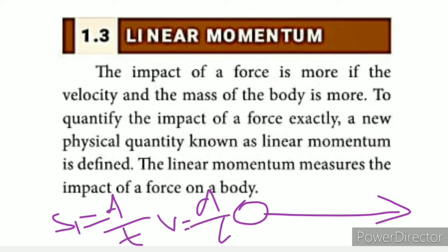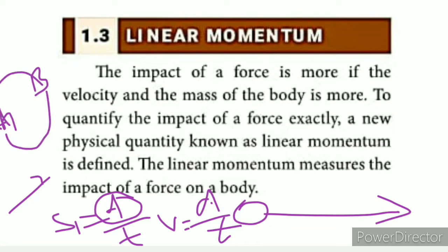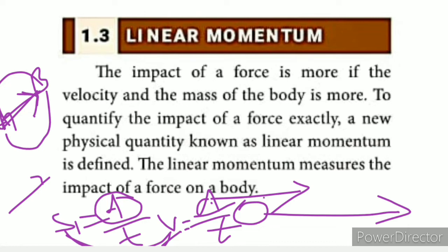Distance divided by time gives us speed. The area covered is the displacement. Distance is a scalar while displacement has direction — it is a vector quantity. That is why speed and velocity are two different terms.